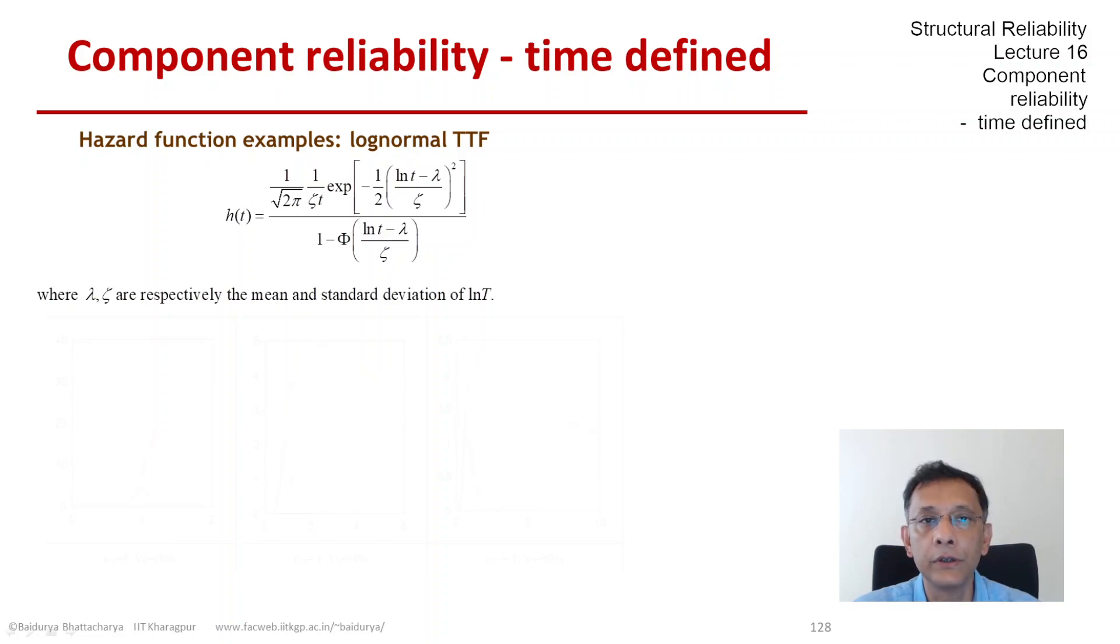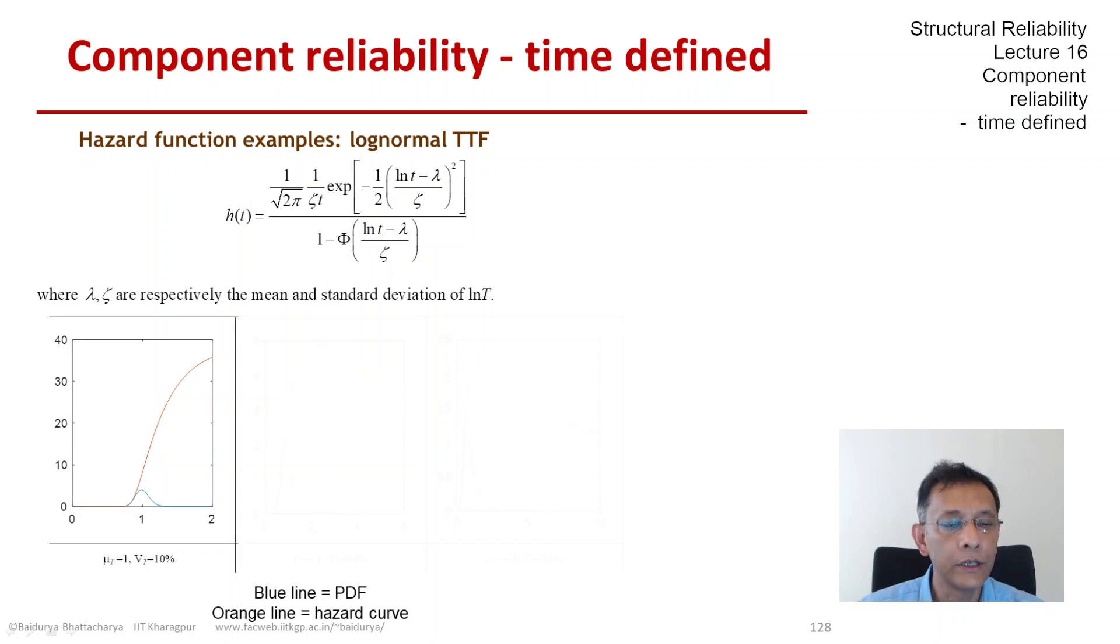And this particular function has some interesting shapes. So let's review that. So here, first, what you see is a lognormal random variable whose mean is 1 and whose COV, coefficient of variation, is 10%. It's rather small. So the distribution is not very spread out.